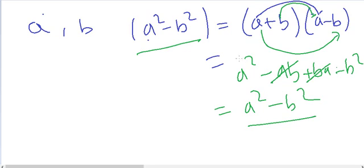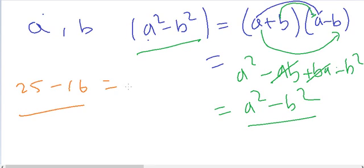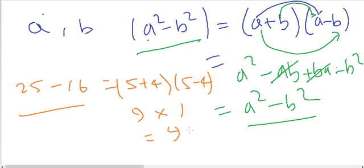So a² - b² is always equal to (a+b)(a-b). For example, if you subtract 16 from 25: 25 is 5² and 16 is 4², so (5+4)(5-4) = 9×1 = 9. The difference between these two numbers is 9.